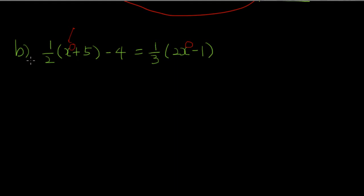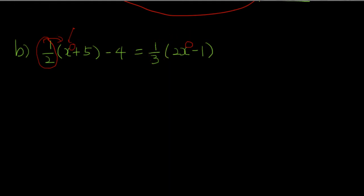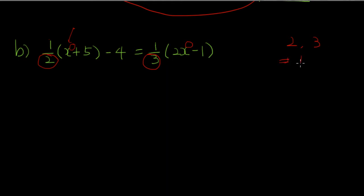You could start by distributing the fractions inside the parentheses, but I wouldn't recommend it because you'd have to deal with fractions and it gets messy. What I would recommend is to find a number to multiply on both sides to get rid of the 2 and 3 at the same time — basically the LCM of 2 and 3, which is 6. So we are going to multiply 6 on both sides.